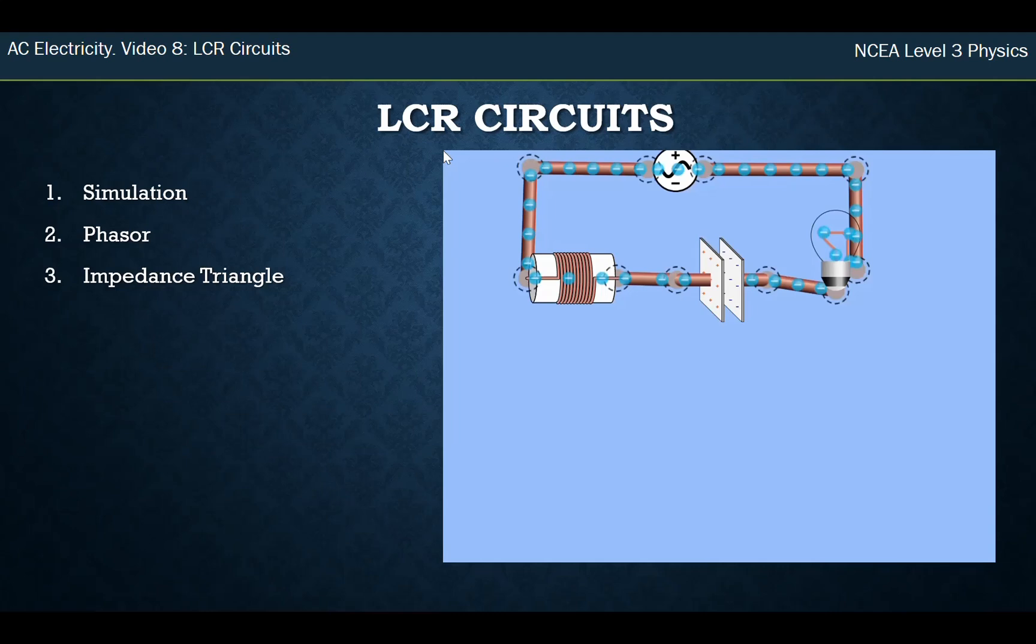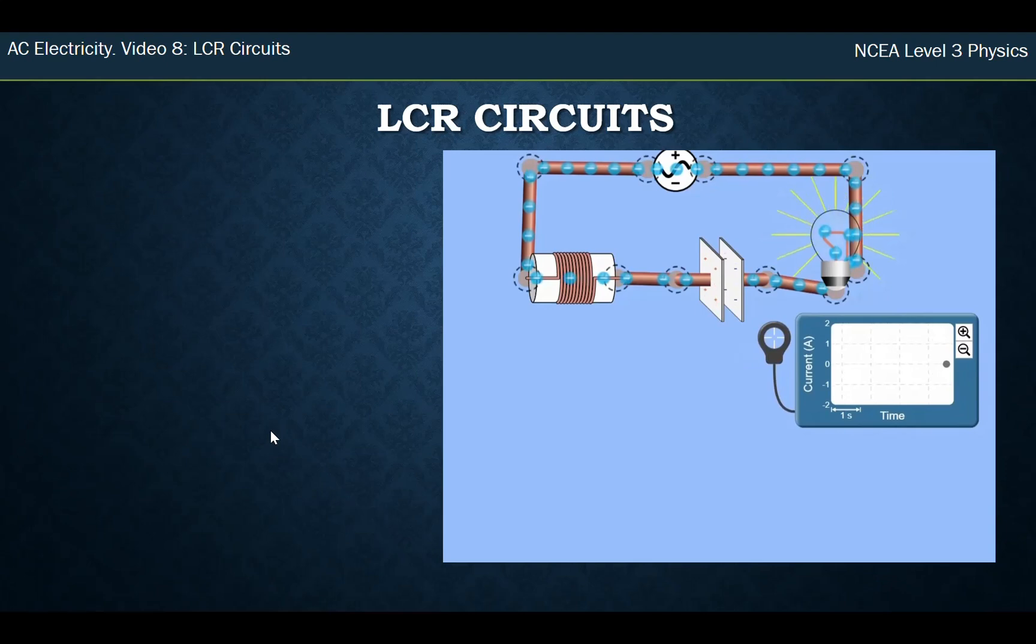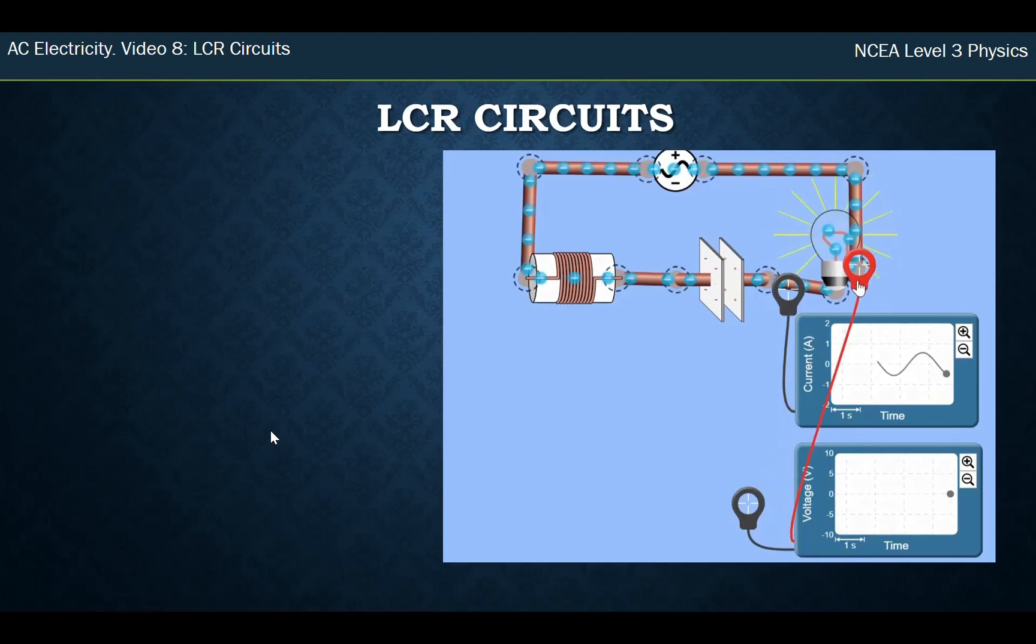So we'll just start with the simulation, look at the phasor diagrams and finish with impedance triangle. So here we have a little simulation I've made on the FET website and I'll get it going. And you can see once I start it up we've got electricity going back and forth. The first thing I'm going to look at is compare current to the voltage going through the resistor, which in this case is my light bulb. And just like with all the other circuits we've looked at so far, we see the current in the circuit and voltage in the light bulb are in phase. They reach peaks at the same time, they reach troughs at the same time.